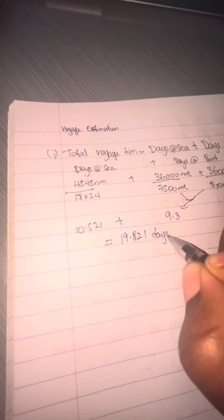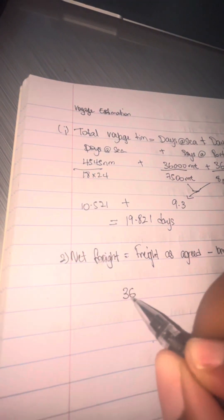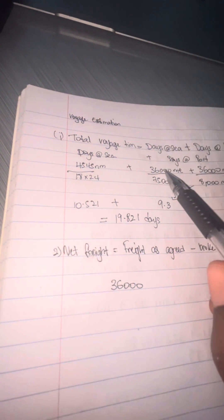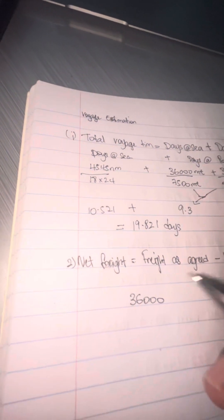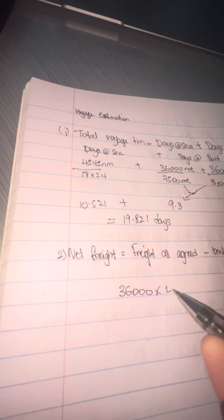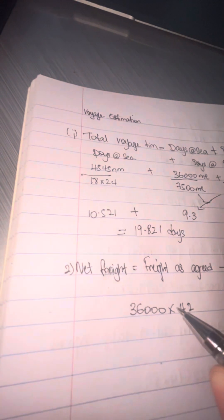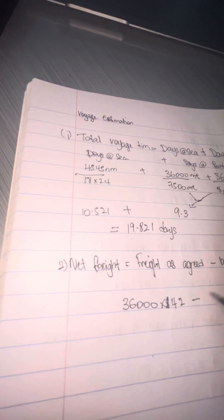Remember guys, I think this is the best way to do it—multiplying the speed by 24 gives you a straight-up answer. The next part is net freight. How you get net freight is freight as agreed minus brokerage commission. Remember to look at the screenshot you took at the beginning.